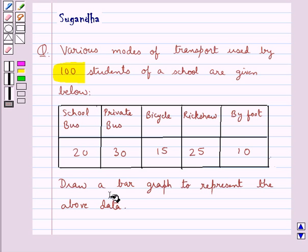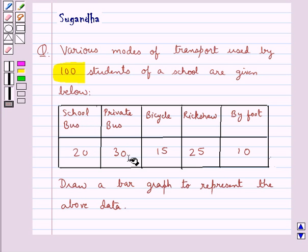In this data we have given that the number of students using school bus as the mode of transport are 20. For private bus we have 30 students. For bicycle we have 15 students. For rickshaw we have 25 students and by foot we have 10 students.